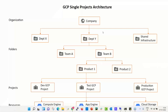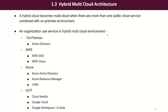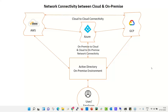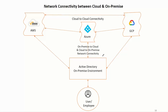Now combining all three cloud vendors and on-premises: a typical organization uses Active Directory on-premises for authentication and access management, and connects to AWS, Azure, and GCP. Network-wise, they use site-to-site VPN to communicate across these environments. For example, there may be separate site-to-site VPN connections between on-premises and AWS, between on-premises and Azure, and between on-premises and GCP, as well as between cloud vendors themselves.